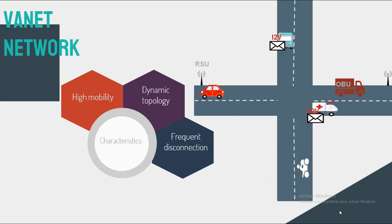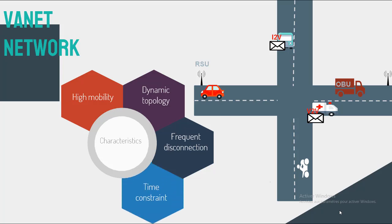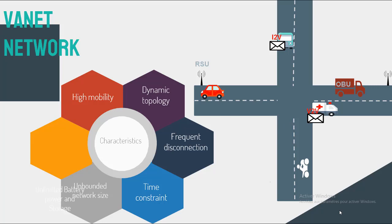Frequent disconnection: due to the two first characteristics, the vehicle often disconnects from the network. Time constraints: the delivery of messages is critical because some messages should be received on time so the right decision can be made. Unbounded network size: VANETs can be implemented for a city or even for a country. Unbounded battery: VANET does not suffer from energy or storage problems.